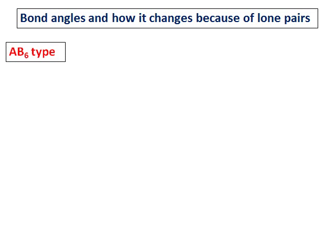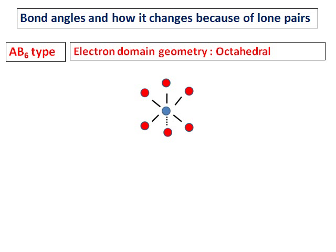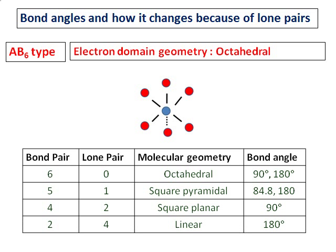The next type is AB6, and the electron domain geometry is octahedral. An octahedral molecule has one central atom with six surrounding atoms, as shown. A perfect octahedral molecule has bond angles of 90 and 180 degrees. Depending on the presence of one, two, or four lone pairs, the molecular geometry changes to square pyramidal, square planar, or linear, and the bond angles also change.